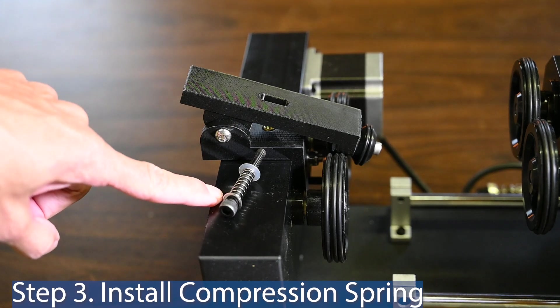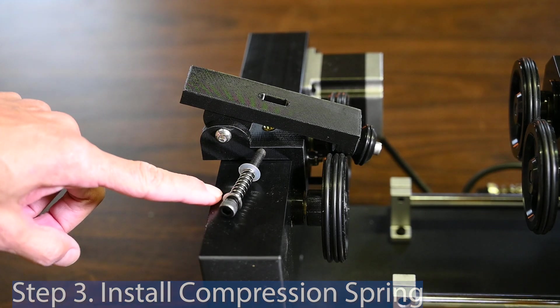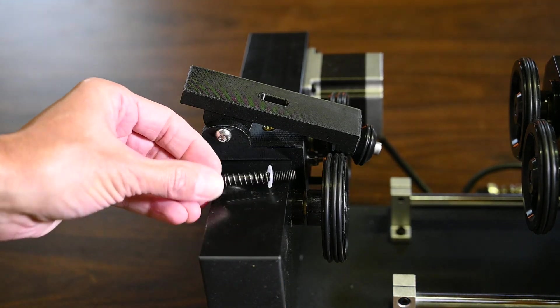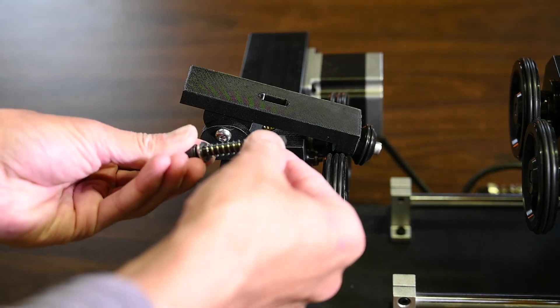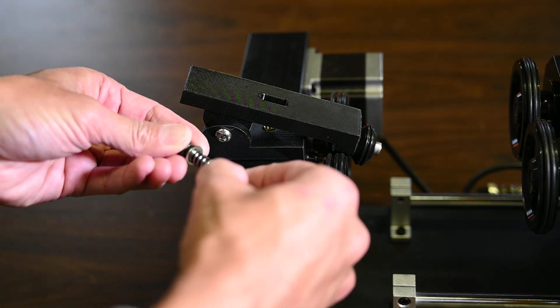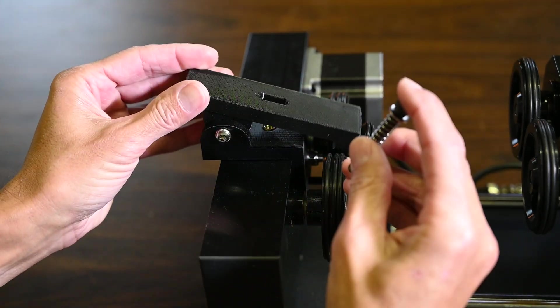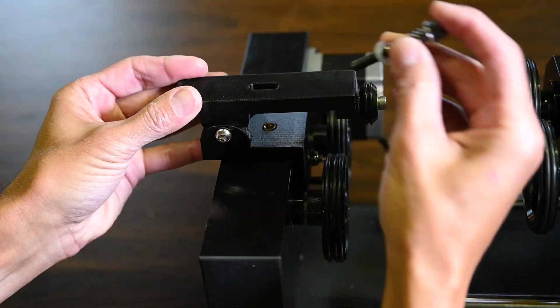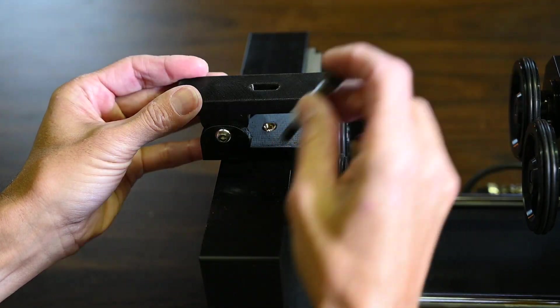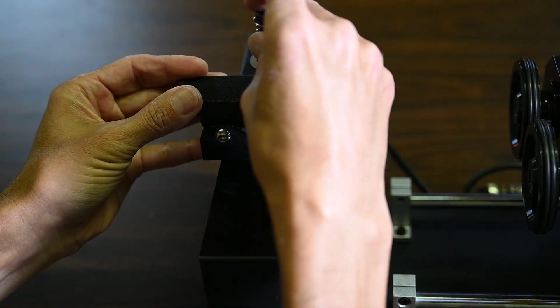Step three is the installation of the compression spring. I taped this up just so that all the washers and springs don't fall off during shipment. So once you've removed the tape all that you need to do to install the compression spring is to lift the front arm. It's easier if this is parallel to the bottom plate.